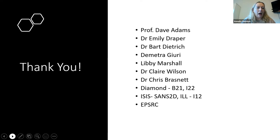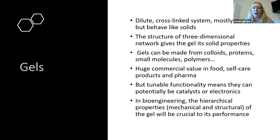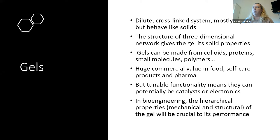I'm going to start by giving you an overview of a gel so you can get an idea of the type of materials I'm talking about. We can define a gel as a dilute cross-linked system which is mostly liquid but behaves like a solid. The materials I'm talking about today are 98-99% liquid, and what we have is effectively something that forms a fibrous network in three dimensions that traps this liquid inside the network.